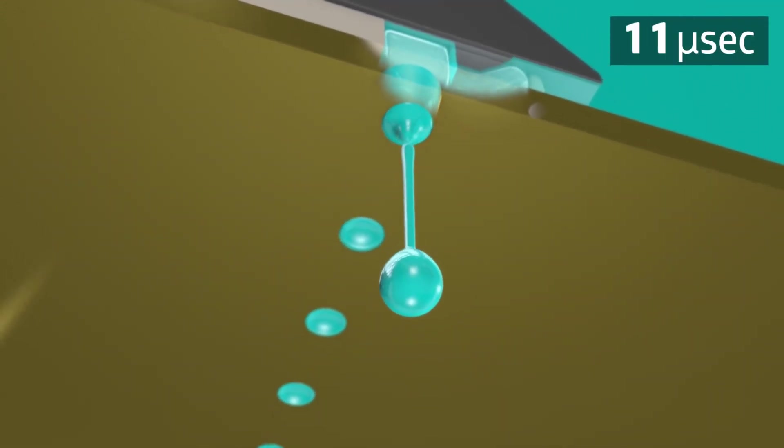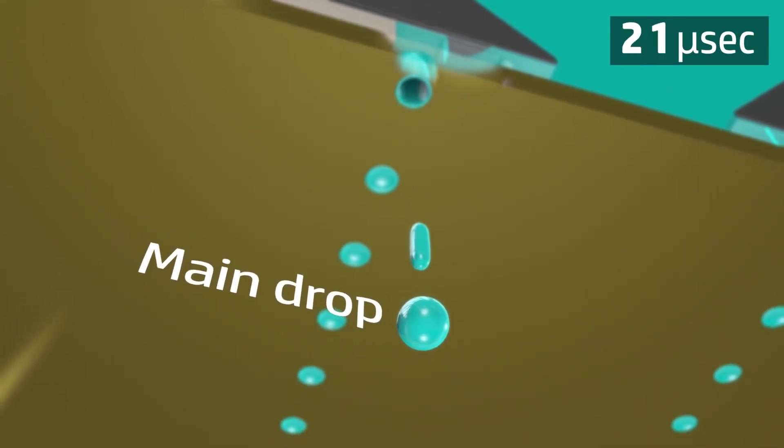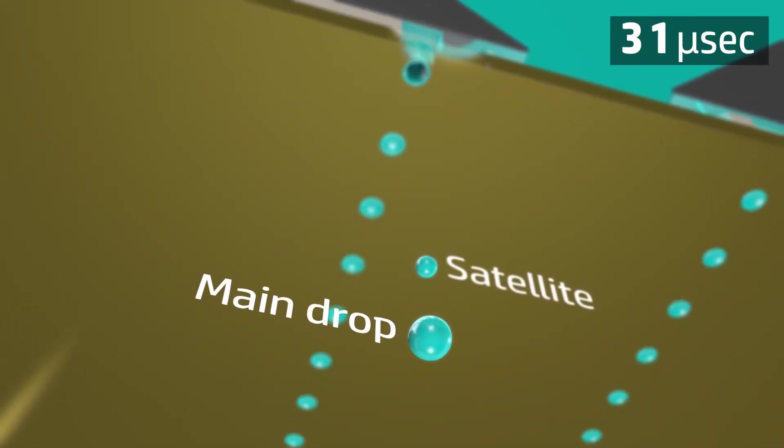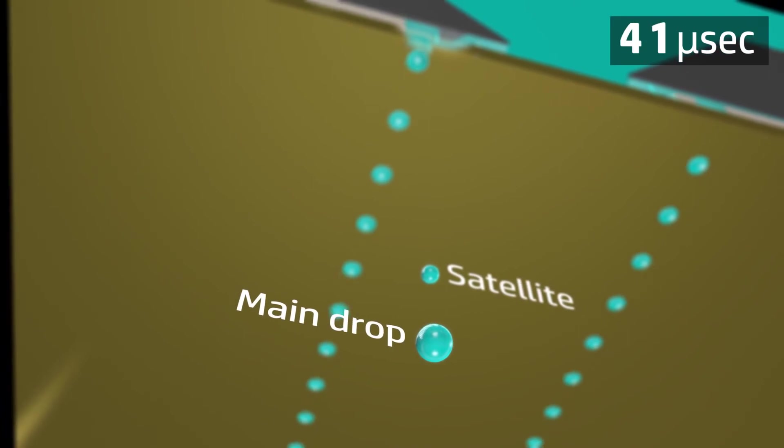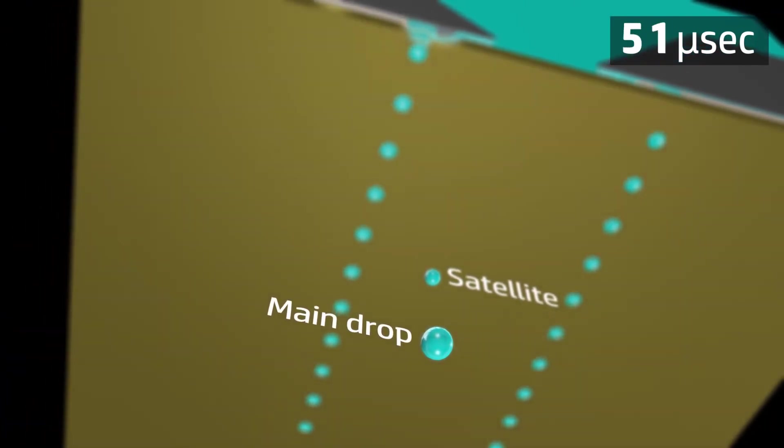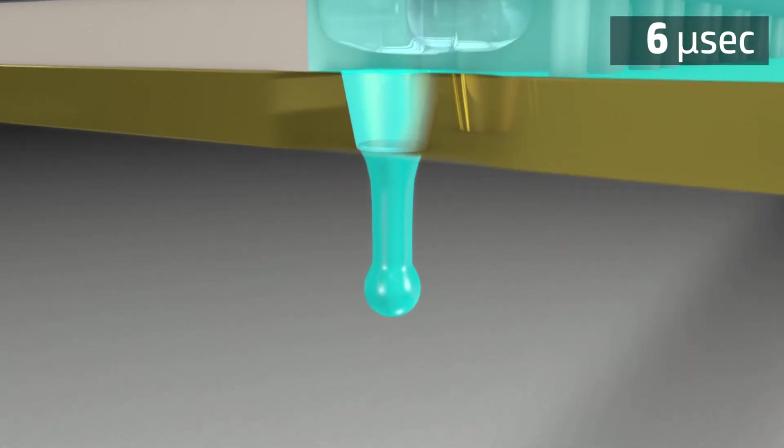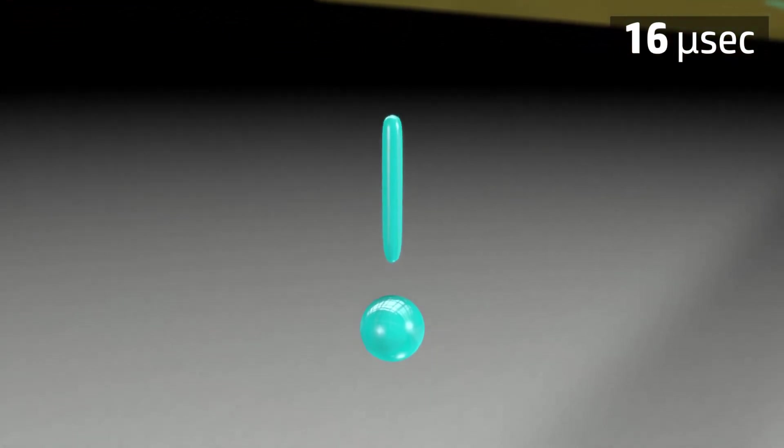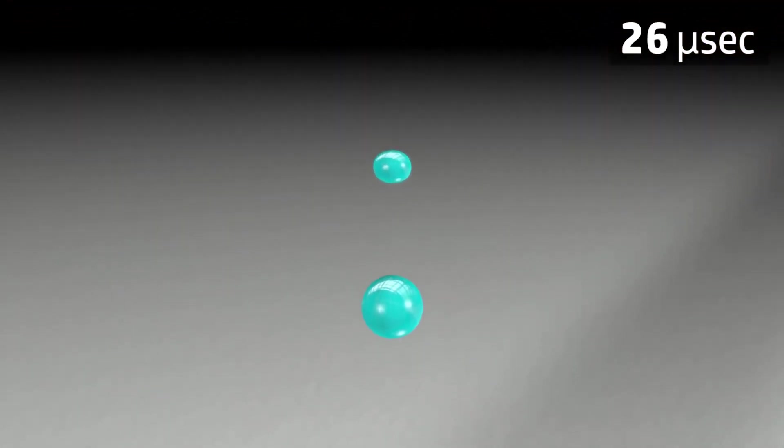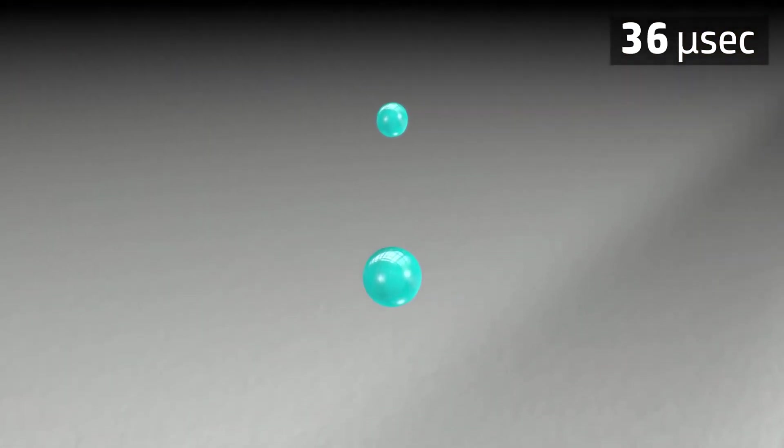Drop ejection typically produces a main drop and smaller trailing drops called satellites. The drops are moving at about 10 meters or 33 feet per second. The gap between the printhead and the paper is about one millimeter.